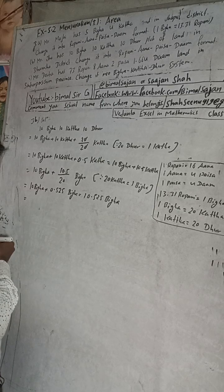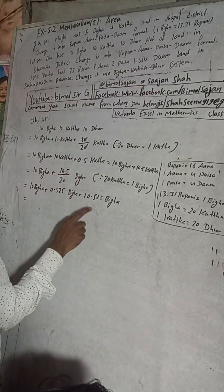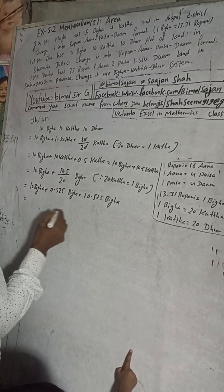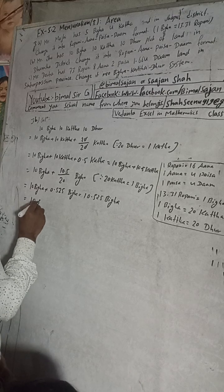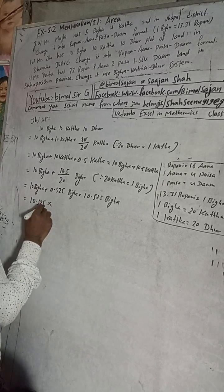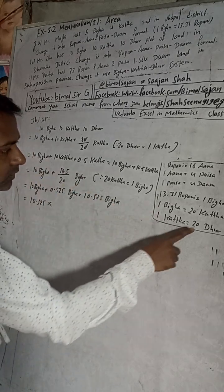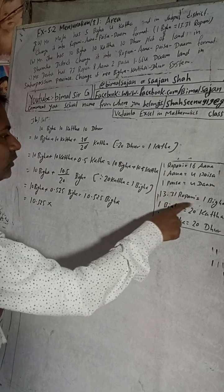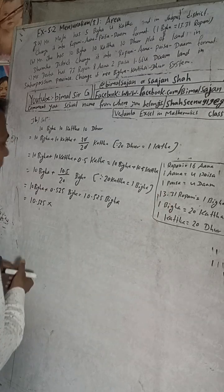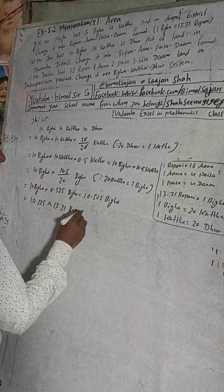Now we have to convert 10.525 bigha into ropani, ana, paisa, dam format. First, convert bigha to ropani. See the relation: 1 bigha is equal to 13.31 ropani. So when we multiply by 13.31, we get the result in ropani. So 10.525 multiplied into 13.31 will give us ropani.